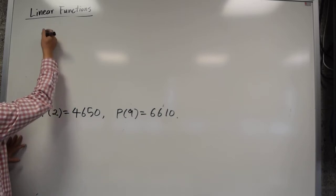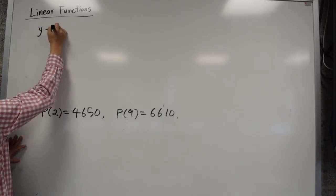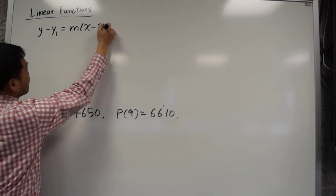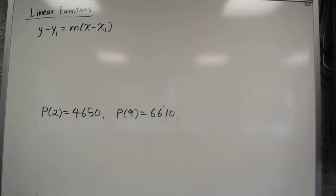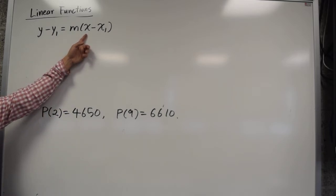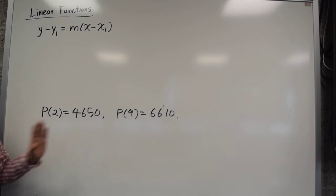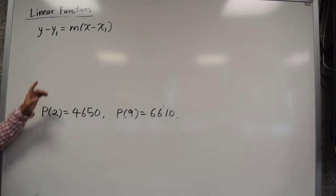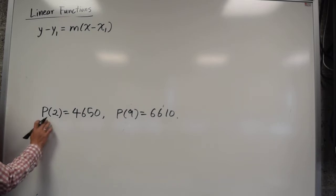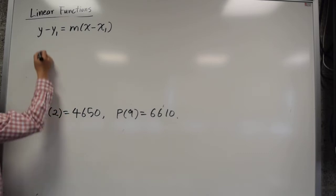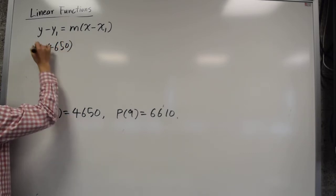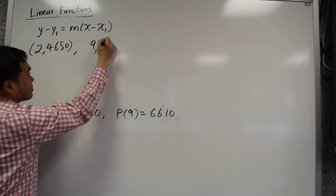All right, let's apply what we knew before. It's y minus y1 equals m times x minus x1. This is the format we're going to solve. One thing to be careful is, later on, x should be replaced by t, because the input is t, not x. And also, y will not be replaced by f of x, but by p, or better, by p of t. We'll talk about that later. All we have to do right now is figure out what x and y are. So this one is (2, 4650). And this one is (9, 6610).